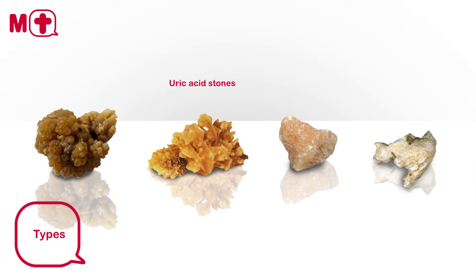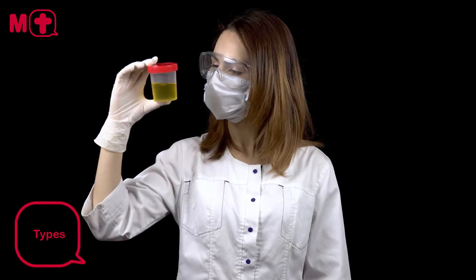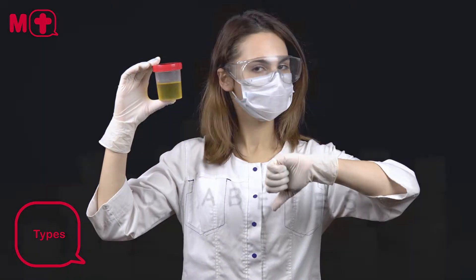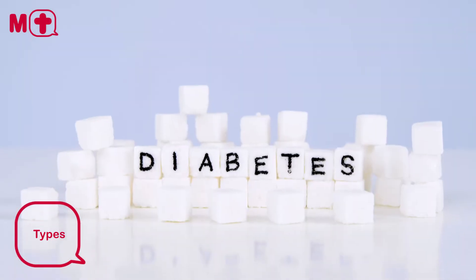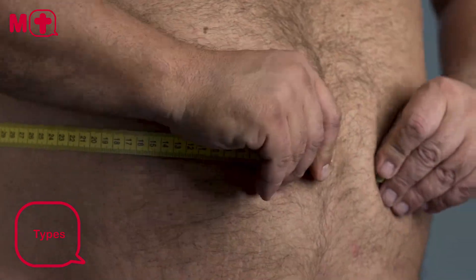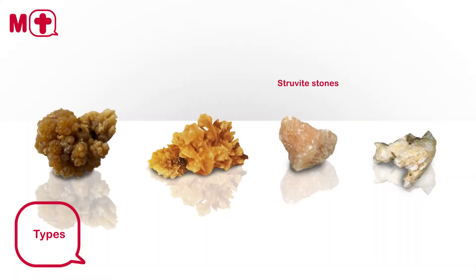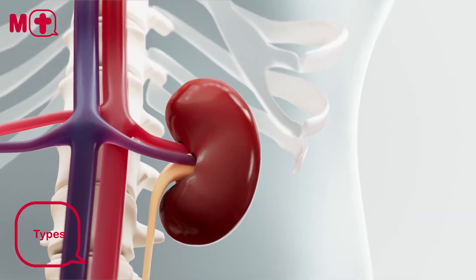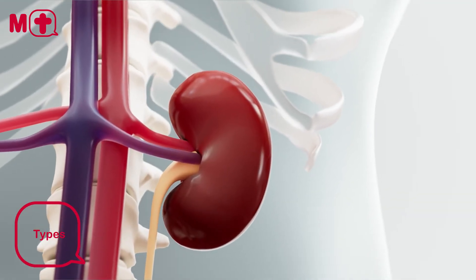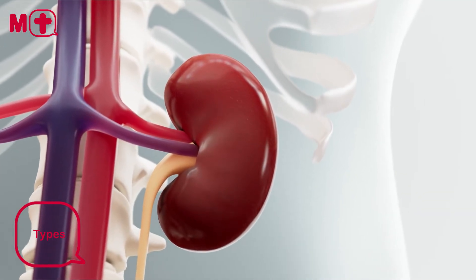The second most common type of kidney stone is uric acid stones. Uric acid stones form when there's too much uric acid in the urine. This can be caused by conditions such as diabetes or obesity. The third type is struvite stones. Struvite stones contain high amounts of magnesium, ammonia, and calcium carbonate. These stones are typically less common and are mainly caused by bacterial infections in the upper urinary tract.